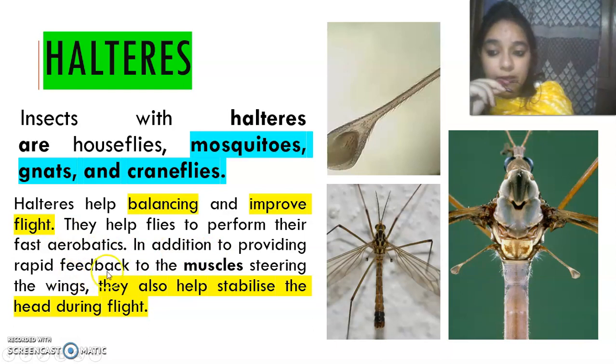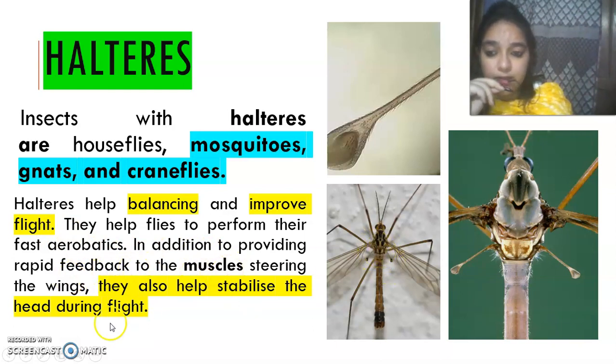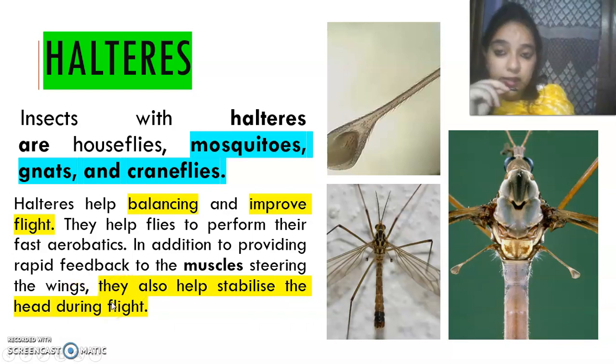Halteres provide rapid feedback to the thoracic muscles. They basically help in steering — helping the insect change direction and maintain speed. This is why flies and mosquitoes are such powerful flyers, as you have seen it is not easy to catch a house fly or a mosquito.